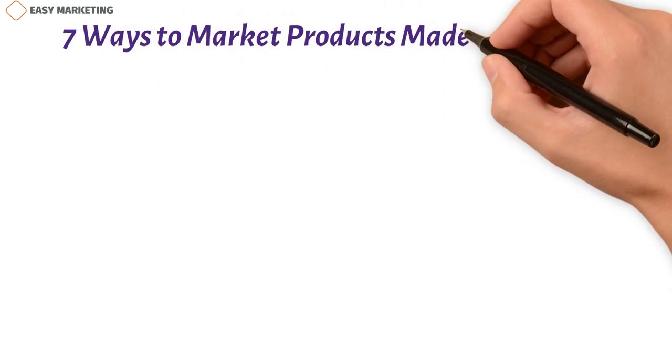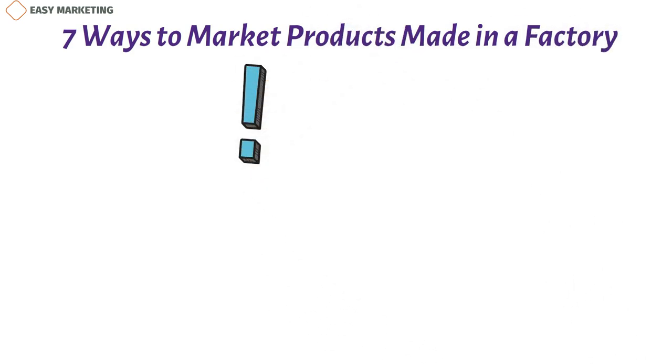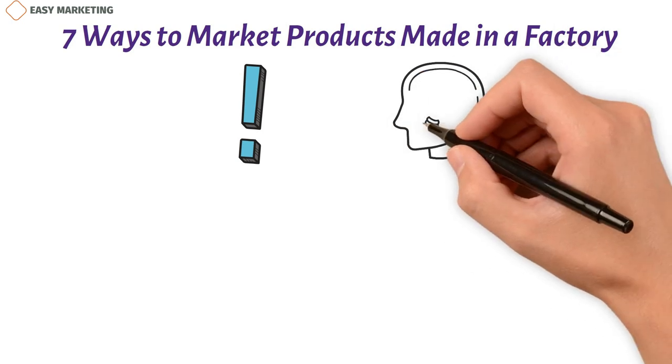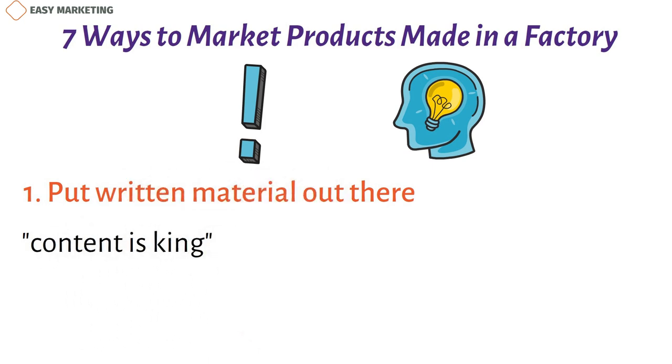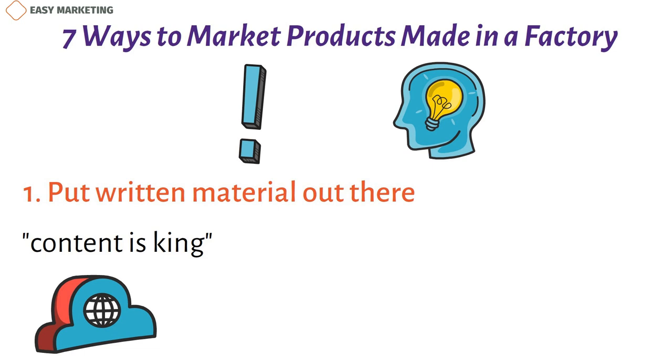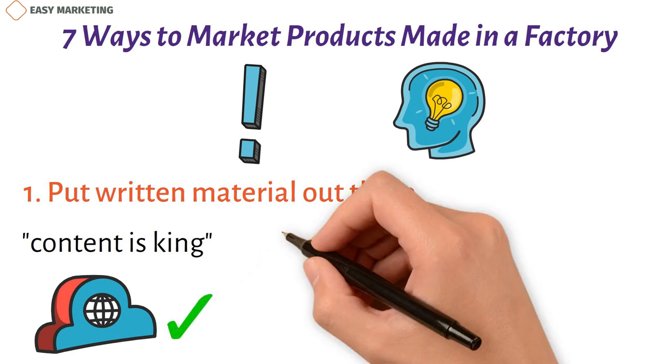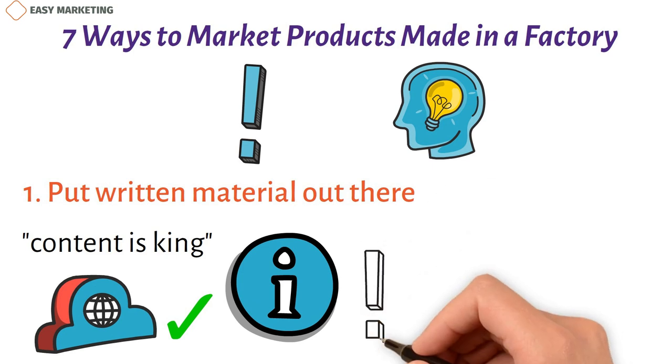7 ways to market products made in a factory: Now that you know why it's important to sell manufacturing, how do you do it? Start with these 7 marketing ideas for businesses that make things. Put written material out there. You may have heard that content is king. It's a saying that's been around for a long time, and online marketers still find it to be true. Your site's material, or the information you put on it, is the most important part of all of the following.